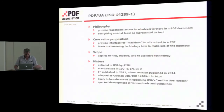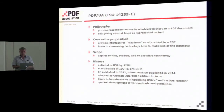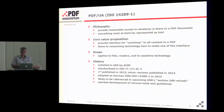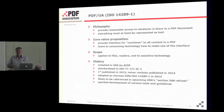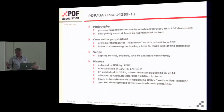Let's get to PDF-UA. PDF-UA is an international standard by ISO, published in 2012 for the first time, just revised last year fixing a few minor issues. It addresses universal access to content in PDF files. The philosophy behind that is to provide reasonable access to whatever is there. It does not guarantee that what is there is good — it makes poor content as accessible as good content. It doesn't try to fix everything in the world, just offering access to whatever is inside a PDF document.